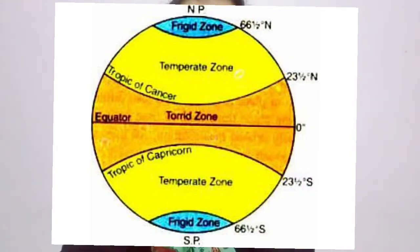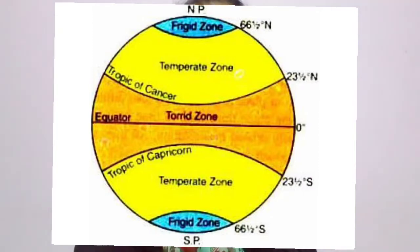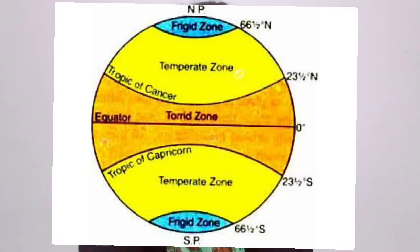From 23 degree 30 minutes to 66 degree 30 minutes, the Temperate zone is found, with moderate temperatures. The Frigid zone lies from 66 degree 30 minutes north to 90 degree north and 66 degree 30 minutes south to 90 degree south. This is a very cold region.